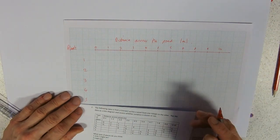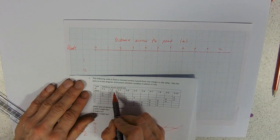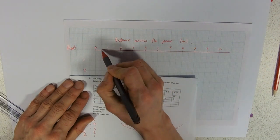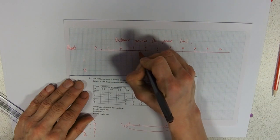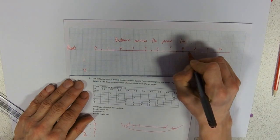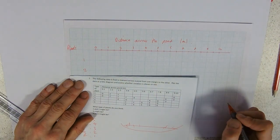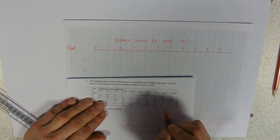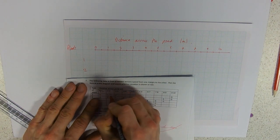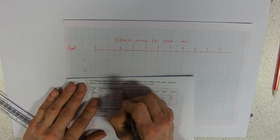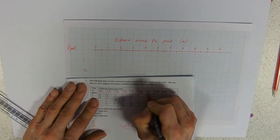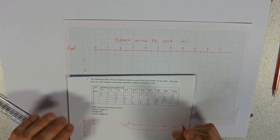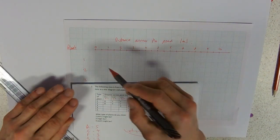This data is a bit odd — it's given in ranges like 0 to 1. We'll plot the point at the halfway point for each interval. Ecology data is occasionally very strange indeed. So our midpoints are going to be 0.5, 1.5, 2.5, 3.5, 4.5, 5.5, 6.5, 7.5, 8.5, 9.5. We just need to plot these on our line.